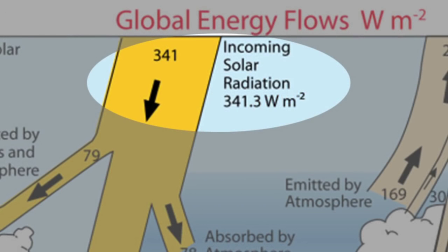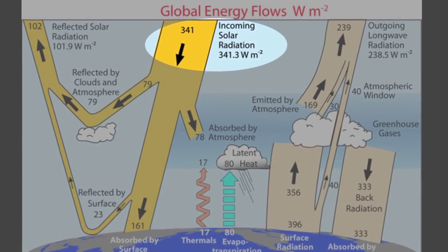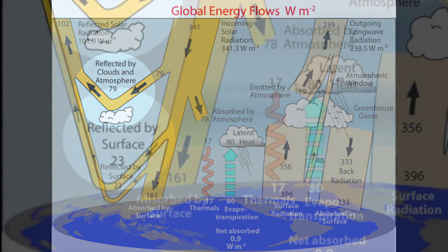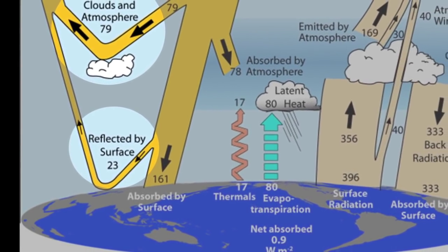By the time the sun's energy reaches the top of Earth's atmosphere, it enters at approximately 341 watts per square meter. But bright white clouds and other shiny particles in the atmosphere reflect a portion of this energy back to space. At Earth's surface, another portion is reflected and exits.